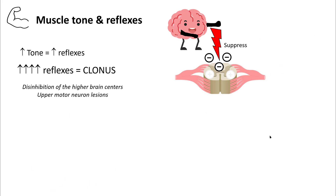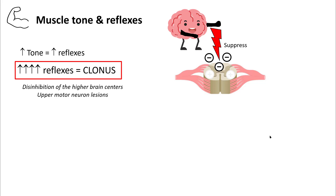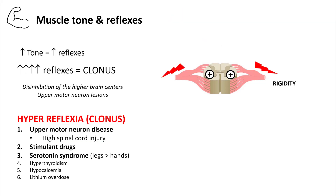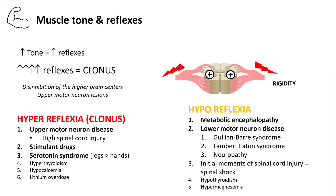Next, check for muscle tone and reflexes. Increased tone will generally result in hyperreflexia, and if the patient is very hyperreflexic you should be able to elicit clonus. The spinal cord is under constant suppression from the brain, so any damage to upper motor neuron function will result in disinhibition and hyperreflexia. Hyperreflexia can also be seen in patients using stimulant drugs and with serotonin syndrome. Hypothyroidism, hypocalcemia, and lithium overdose can also result in hyperreflexia. Hyporeflexia, on the other hand, results from damage to the lower motor neuron — the reflex arc — and is most commonly seen in metabolic encephalopathy. Patients with hypothyroidism and hypermagnesemia can also have hyporeflexia and flaccidity.